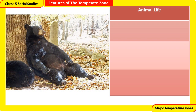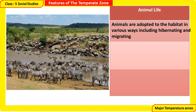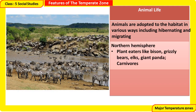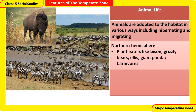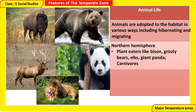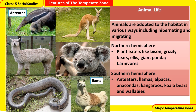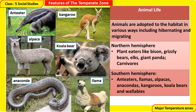Animal life in the Temperate Zone: animals are adapted to the habitat in various ways, including hibernating and migrating. In the Northern Hemisphere, plant-eaters include bison, grizzly bears, elks, and giant pandas, along with carnivores. In the Southern Hemisphere, animals include anteaters, llamas, alpacas, anacondas, kangaroos, koala bears, and wallabies.